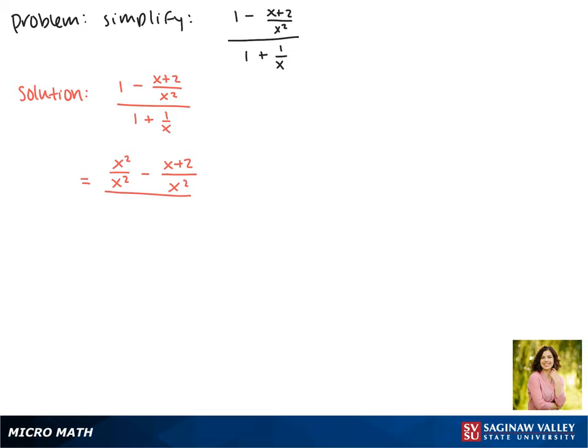In the denominator, we're going to do the same thing. We want a denominator of x, so we can rewrite 1 as x over x, something divided by itself, so it's still equal to 1.